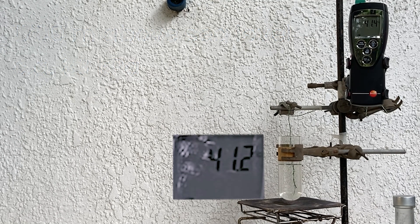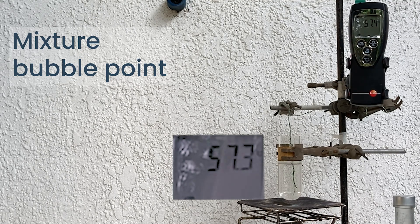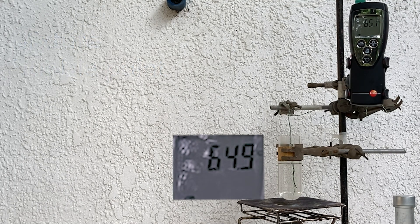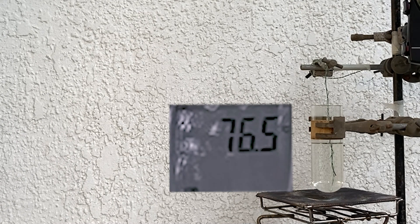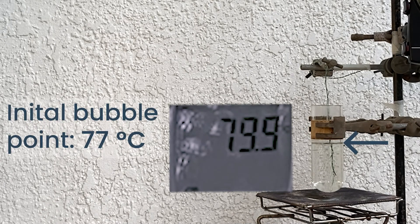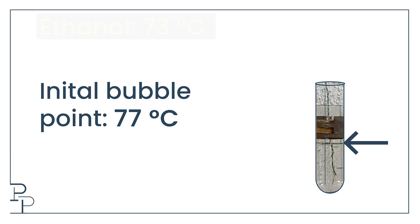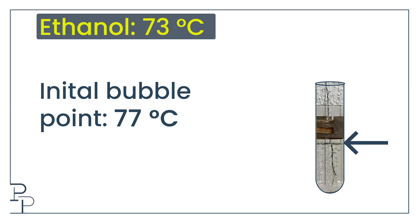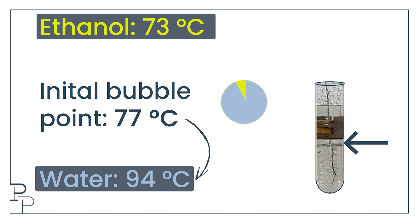When we talk about mixtures we refer to bubble points instead of boiling points. The initial bubble point of my fruit-flavoured ethanol-water mixture is around 77 degrees — between the boiling point of pure ethanol at this altitude, around 73°C, and pure water at this altitude, around 94°C. The bubble point of a mixture depends on the relative amount of each component: the more ethanol, the closer that initial bubble point will be to 73; the more water, the closer it would be to 94.